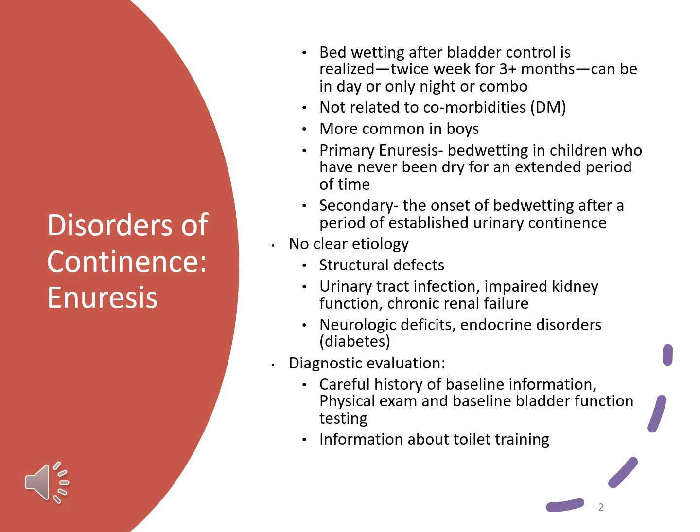With enuresis, this is bladder incontinence, and this occurs in children who are five years and older — so they've already established bladder control — and then they start having incontinence episodes. To be diagnosed, these have to happen at least twice a week for greater than three months, and this can occur at night or during the day.